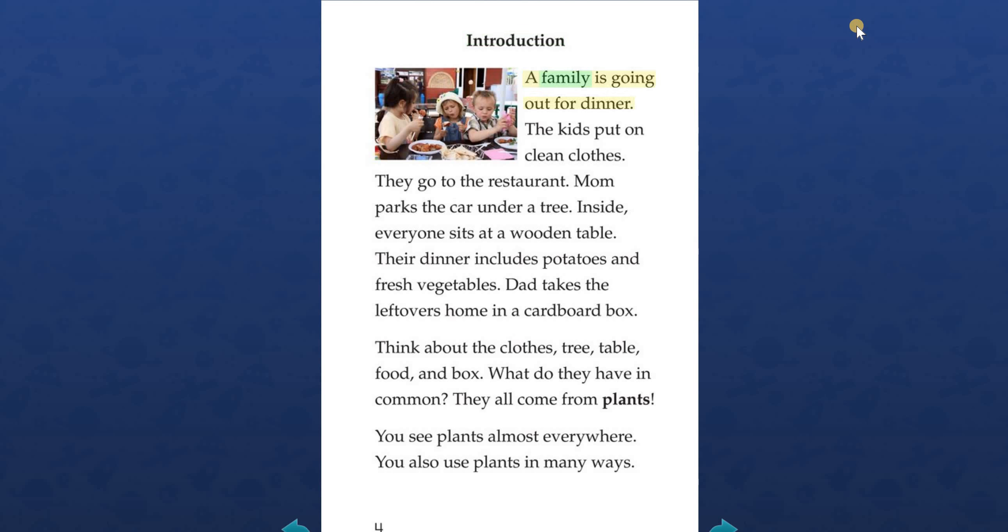Introduction: A family is going out for dinner. The kids put on clean clothes. They go to the restaurant. Mom parks the car under a tree. Inside, everyone sits at a wooden table. Their dinner includes potatoes and fresh vegetables. Dad takes the leftovers home in a cardboard box. Think about the clothes, tree, table, food, and box. What do they have in common? They all come from plants. You see plants almost everywhere. You also use plants in many ways.